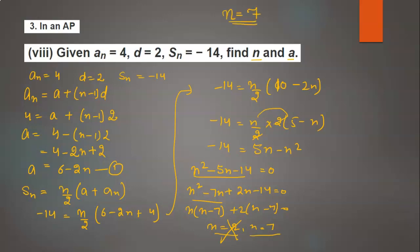We need to find a. Now put the value of n in the first equation: a = 6 - 2×7. 6 - 14 is -8, so the value of a is -8.